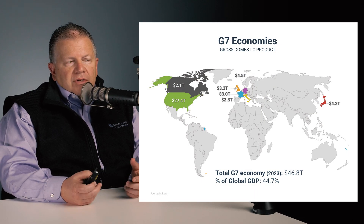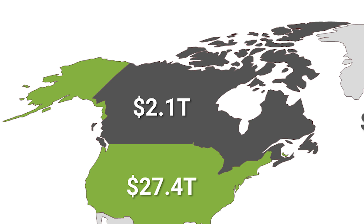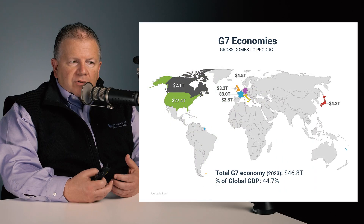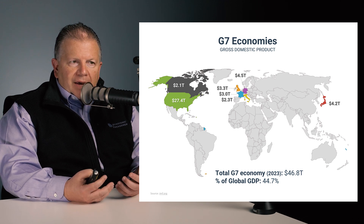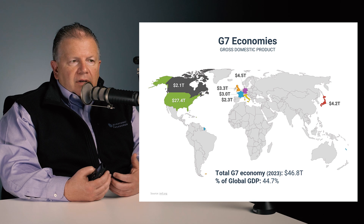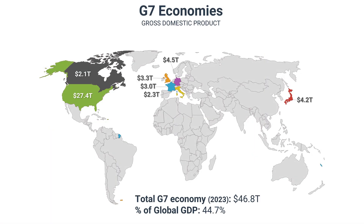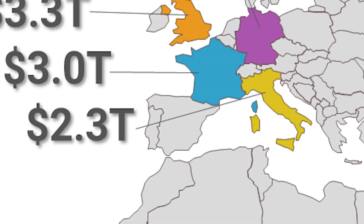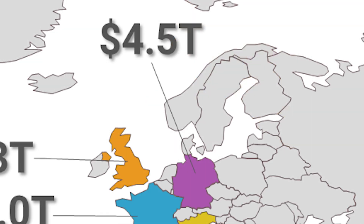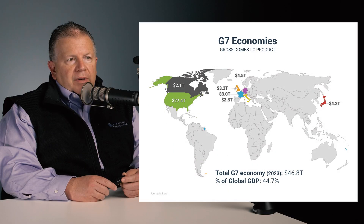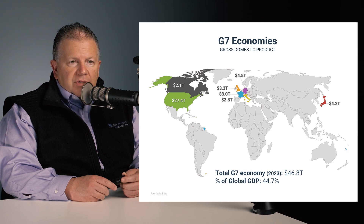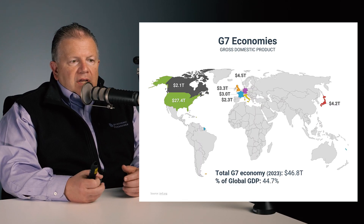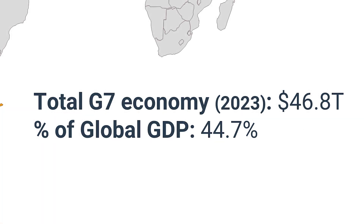The G7 economies — you can see these on the map. You have Canada with $2.1 trillion in the upper left, and the US at $27.4 trillion. This is based on IMF numbers from 2023. You'll see how these numbers may vary based on the year and the data source. Looking across, the orange at $3.3 trillion USD equivalent is Great Britain. Just below that is France with $3 trillion. Italy, the yellow boot-shaped country, $2.3 trillion. Germany has around $4.5 trillion in economic activity in the center. Moving towards the east, you can see Japan at the equivalent of $4.2 trillion US, shown in red on the right-hand side of your screen. So the total economy of the world is about $104 trillion at this time frame.